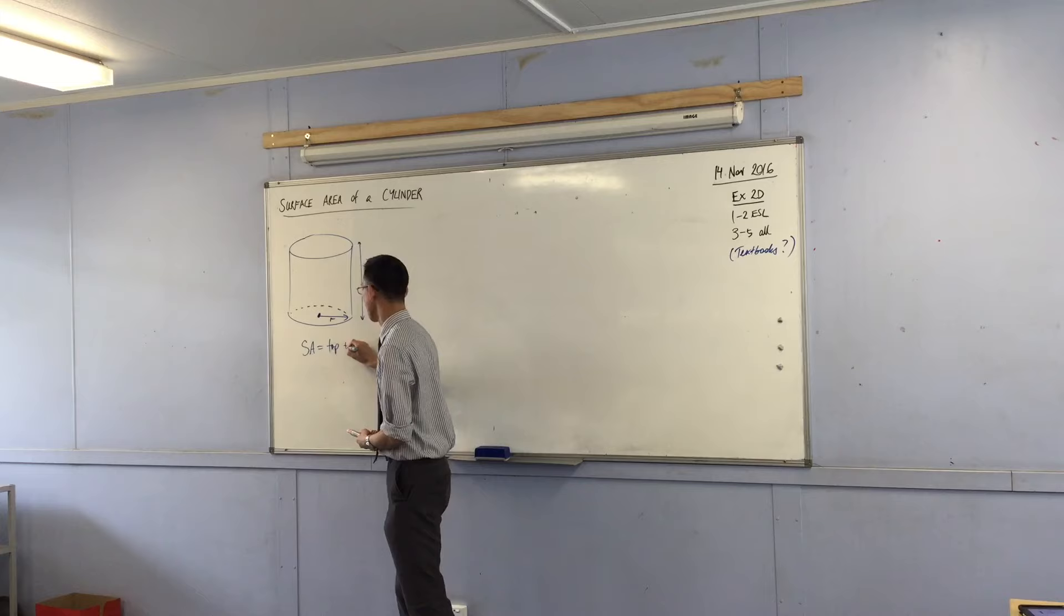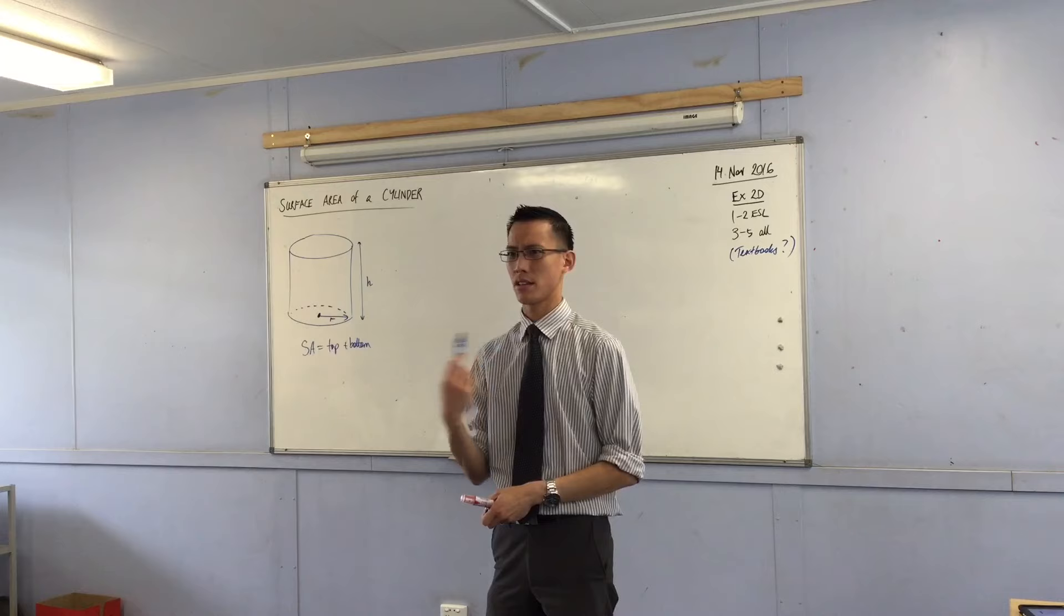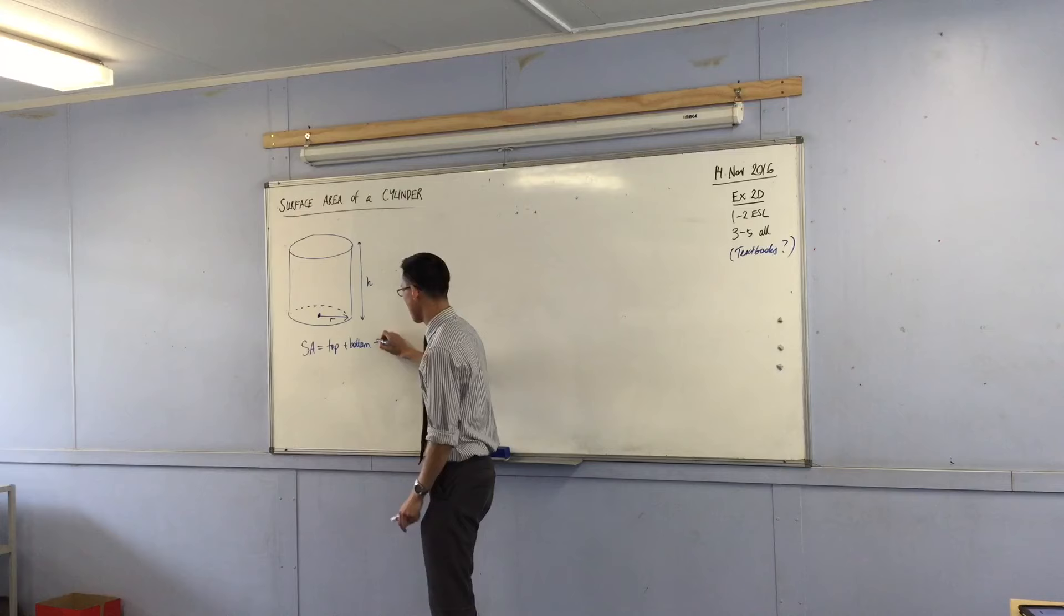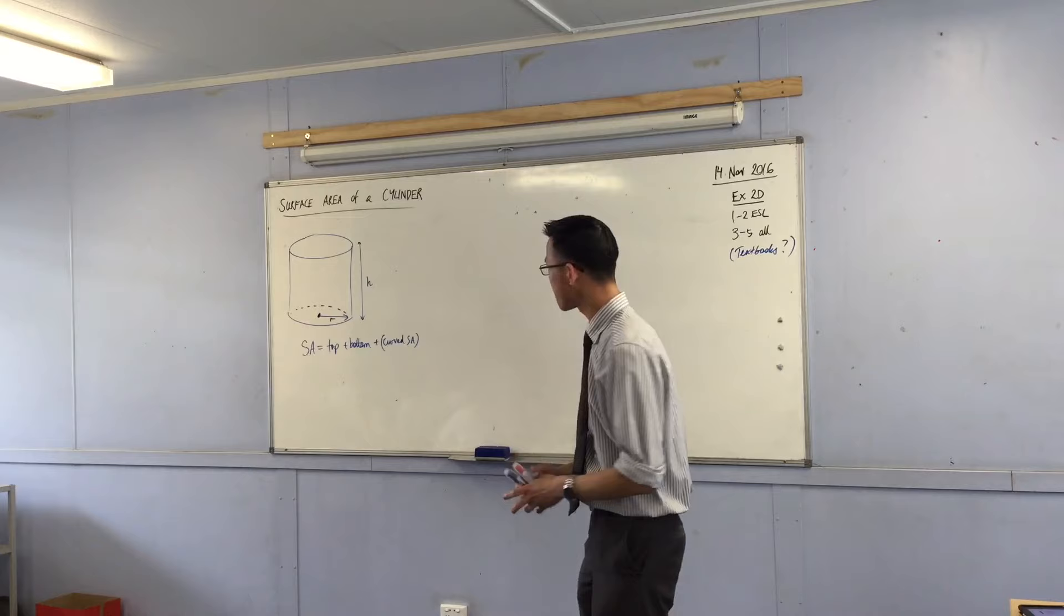So the surface area is going to be the top and the bottom, which are just going to be circles. And then there's one last bit, the main part actually. How would you describe that? The part that goes around. A rectangle that's not straight. Yeah, we'll get to that name. Usually it's called the curved surface area. Because the top and bottom are flat, but this part is what wraps around.